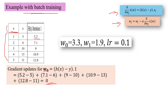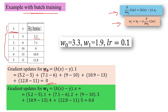For w1, the gradient update is h(x) minus y times x. We take the corresponding x for each data point: (5.2 − 5)×1 for the first point where x=1, then (7.1 − 6)×2 for the second where x=2, then (9 − 10)×3 for the third where x=3, and similarly for the fourth and fifth. This sum also comes out to 0, which means since both gradient terms are 0, the learning rate has nothing to multiply, so there is no weight update.